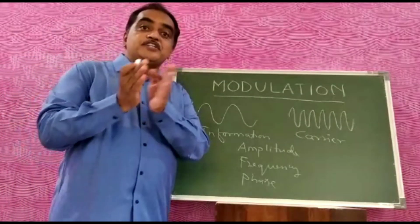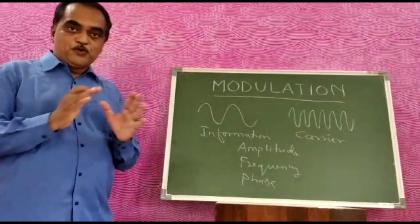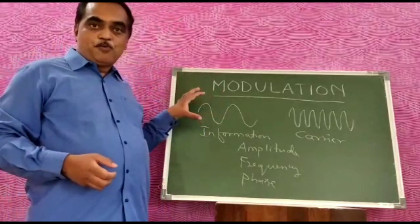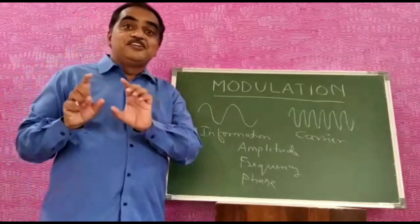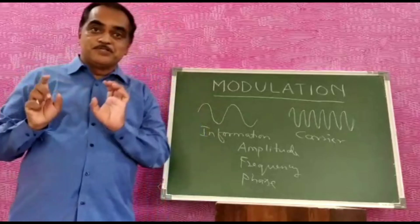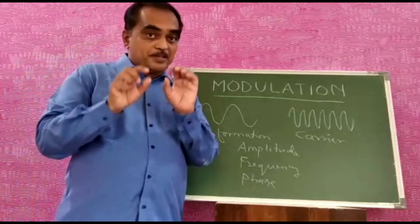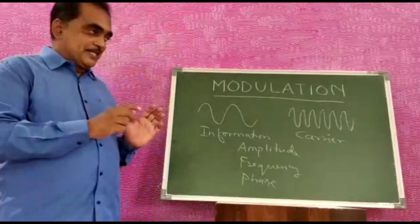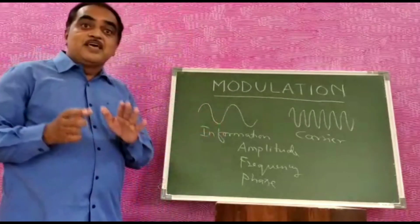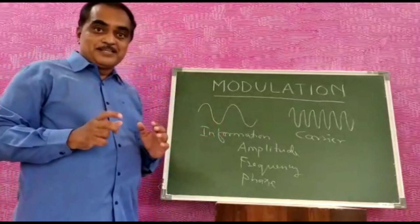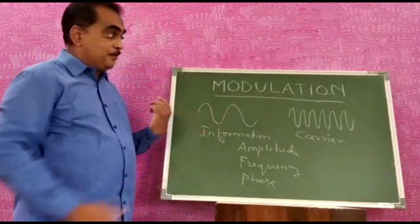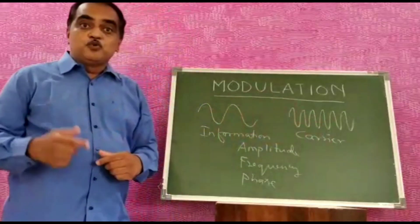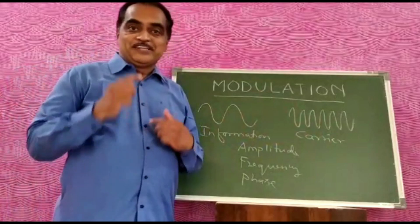Once we come to digital modulation techniques, the information you have — which is in analog form — should be converted to digital form, represented by binary numbers using some line coding of electrical waveforms. If the information is in a digital format and that digital information varies the parameter of a carrier, then you arrive at digital modulation techniques.